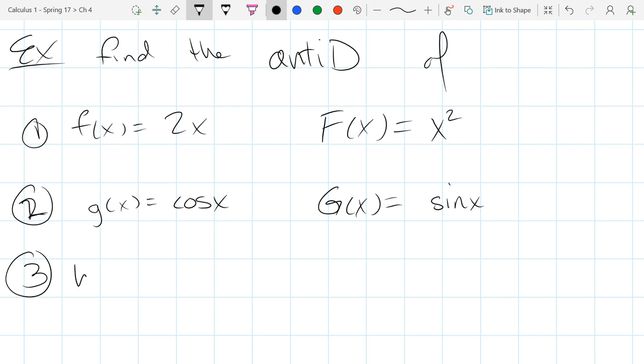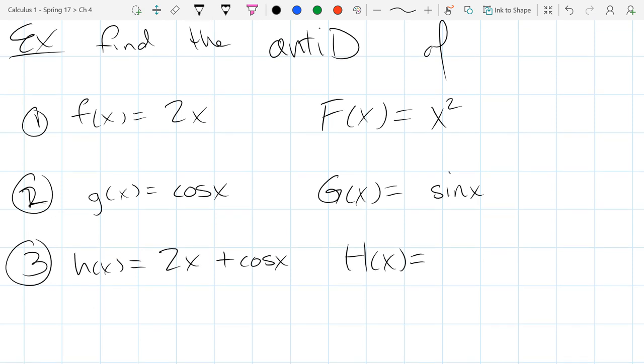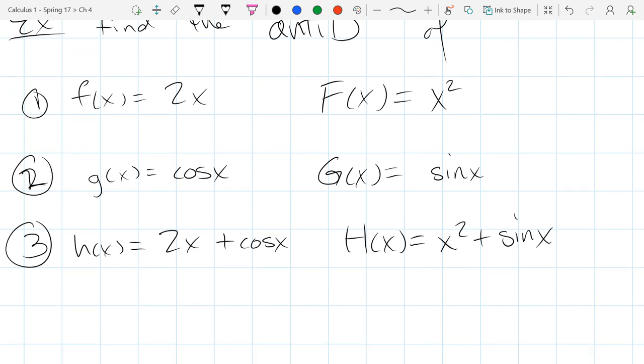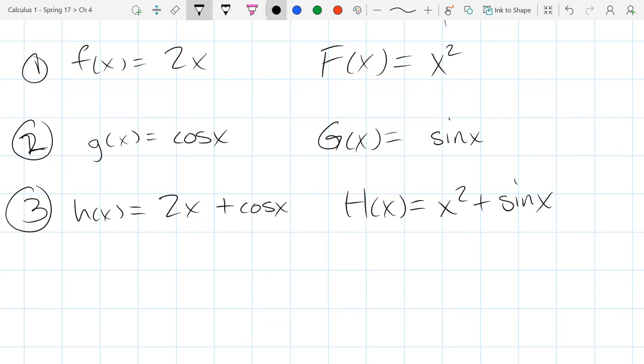Let's get crazy and go h of x equals 2x plus cos x. So what is big H of x? Think about this is the sum rule right here. You should get the big F plus big G or the x squared plus sine x. That's the antiderivative. And again, make sure you check. See if you're right.